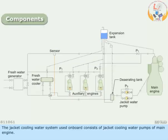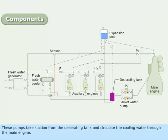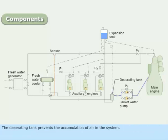The jacket cooling water system used on board consists of jacket cooling water pumps of the main engine. These pumps take suction from the de-aerating tank and circulate the cooling water through the main engine. The de-aerating tank prevents the accumulation of air in the system.